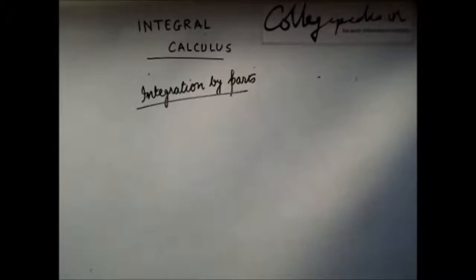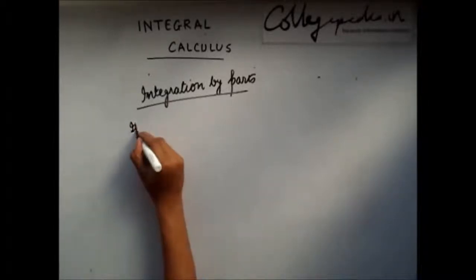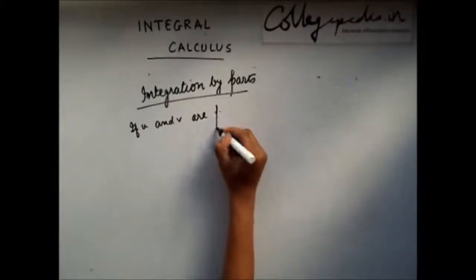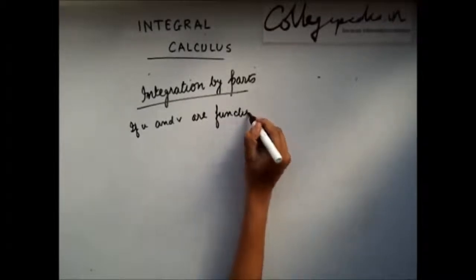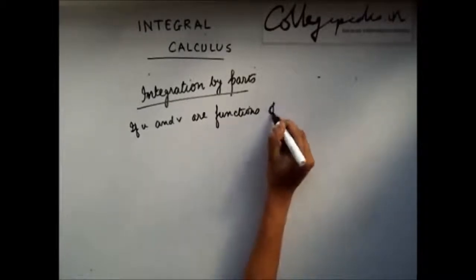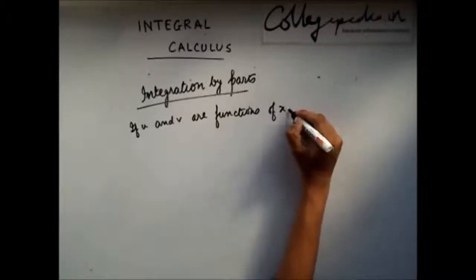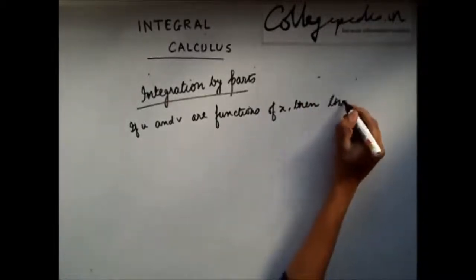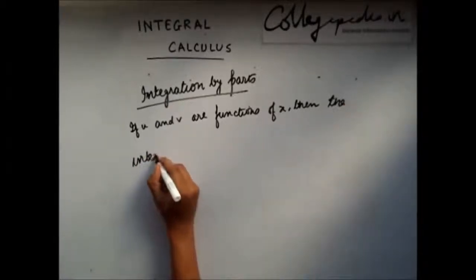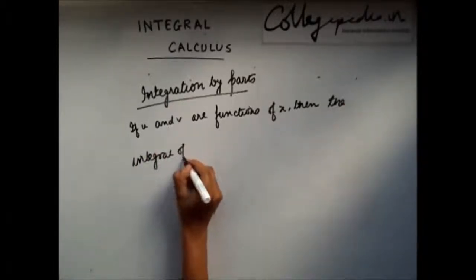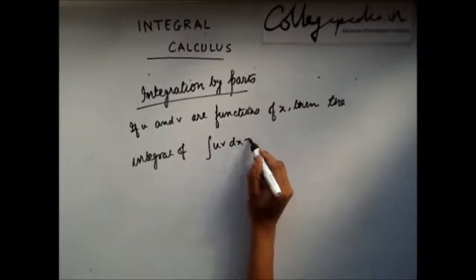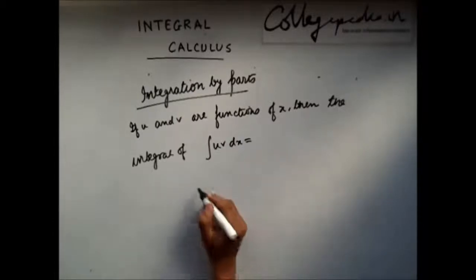Now there is a formula which you should remember here. The formula says that if u and v are two different functions of x, then the integral of product of u v is given by... now this formula is very important.